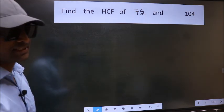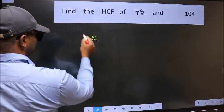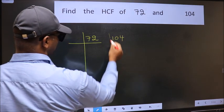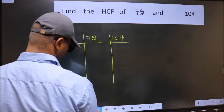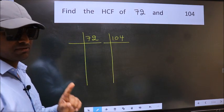What I mean is 72 and 104. This is your step 1.